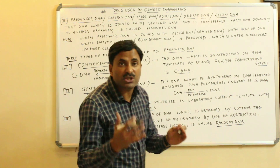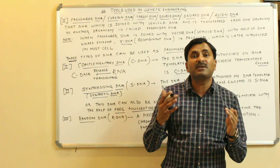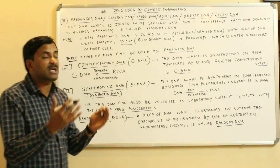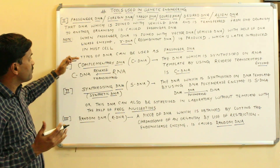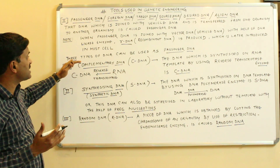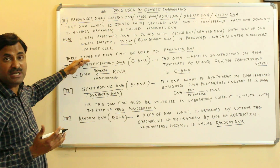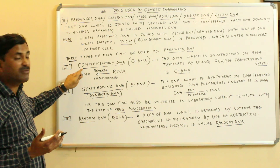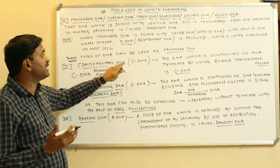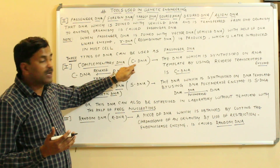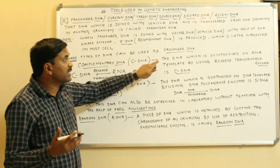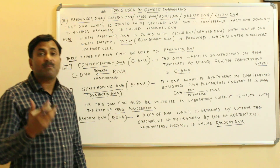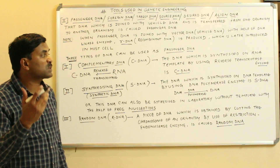The answer is that three types of DNA can be used as passenger DNA. Number one is the complementary DNA, also called cDNA. The DNA which is synthesized on an RNA template by the use of the reverse transcriptase enzyme is called cDNA.